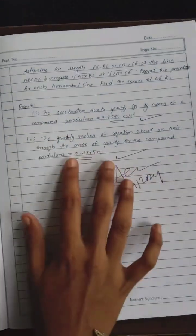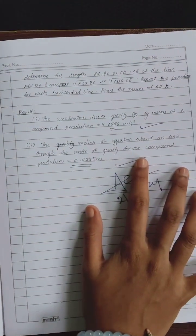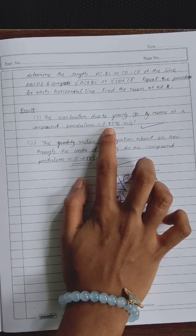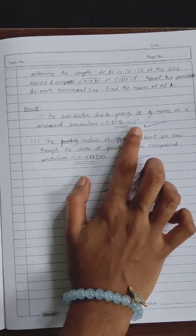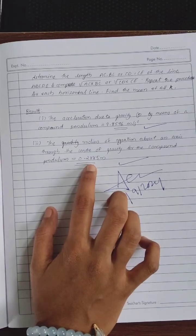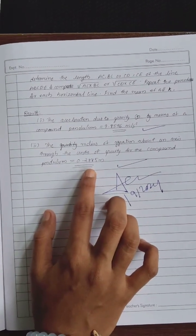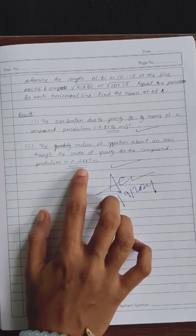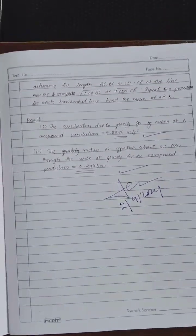And at last, these are our final results. Acceleration due to gravity: 9.856 meters per second squared, and radius of gyration about an axis through the center of gravity for the compound pendulum is equal to 0.2885 meters. Thank you.